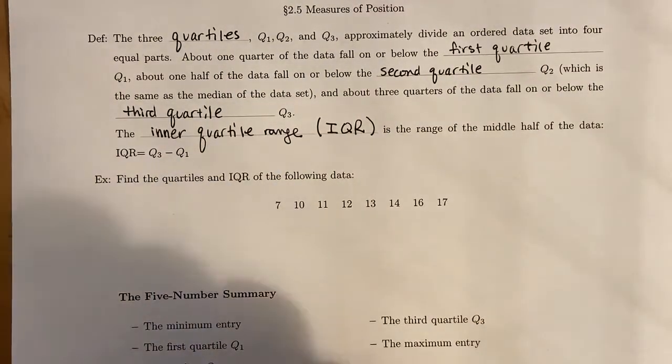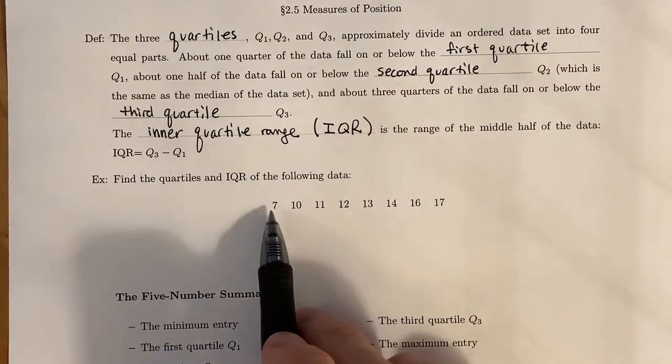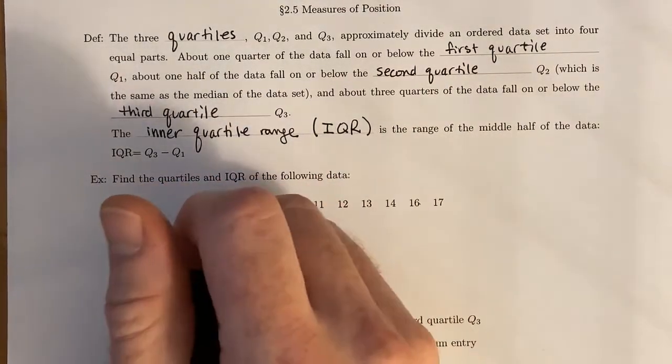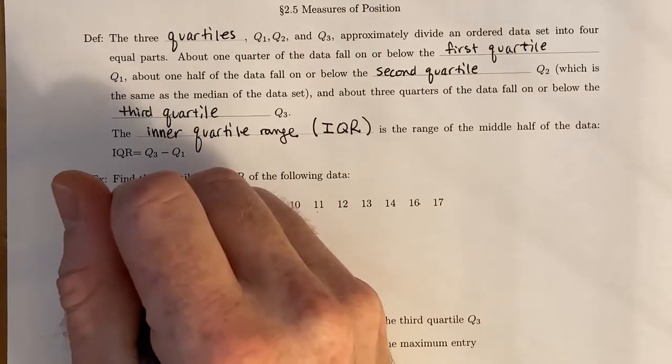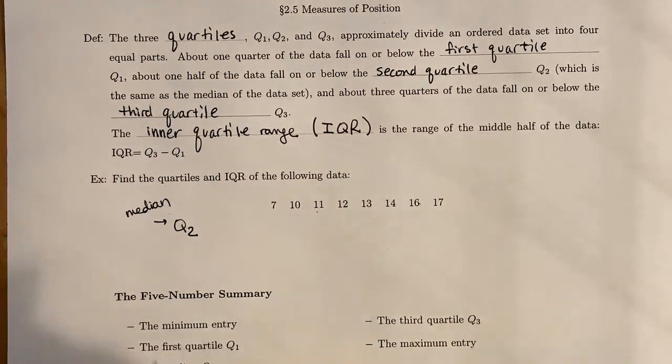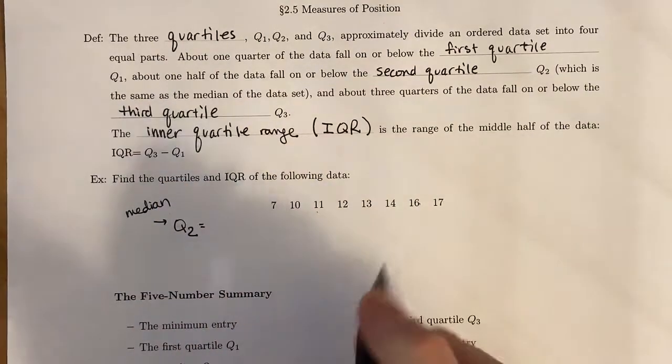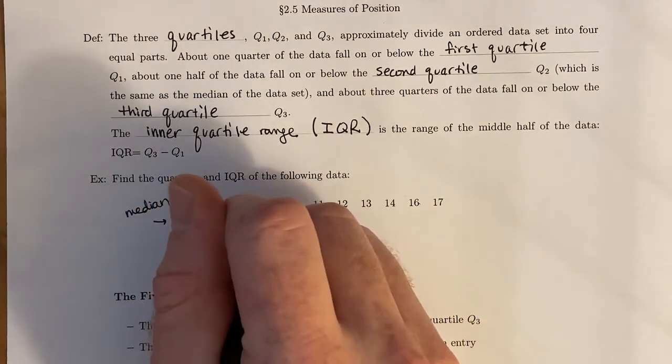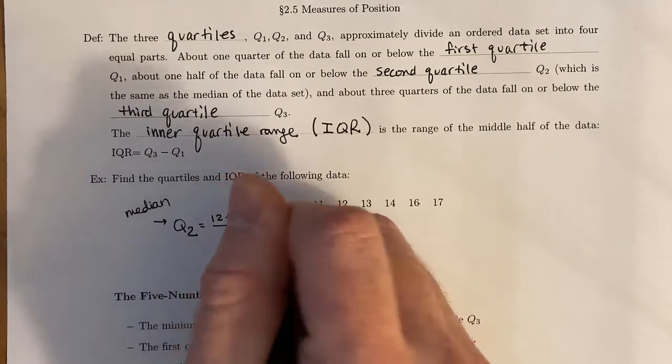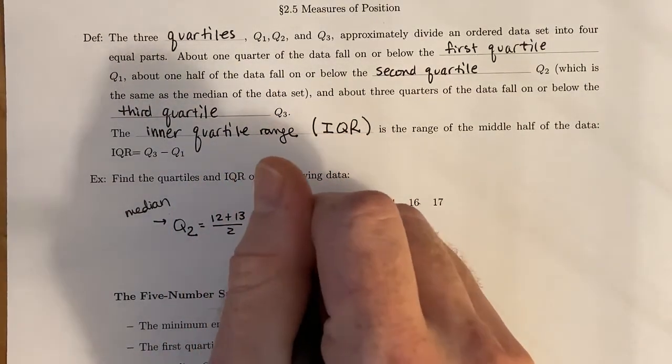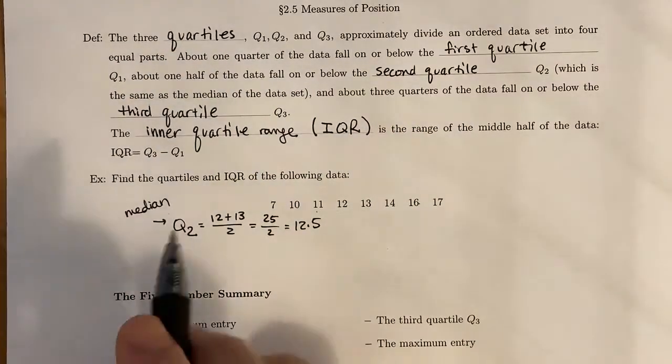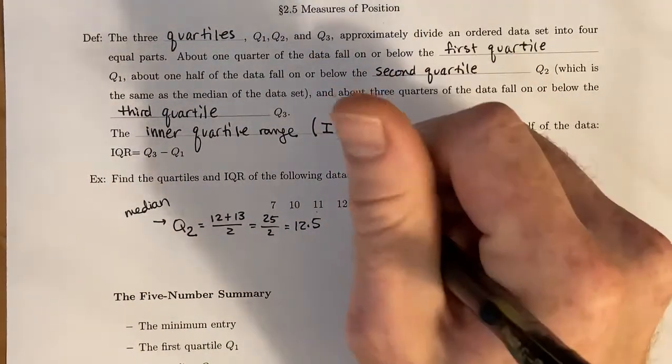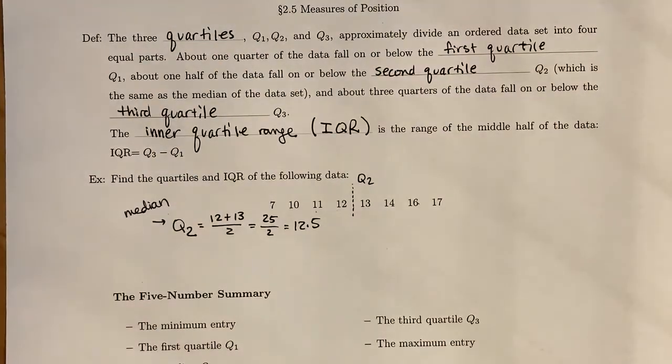Let's look at this example. We want to find each of the quartiles and then figure out the IQR for this data set. We have a total of eight data values, which means that when we find Q₂, which again is just the median, since we have an even number of data values, we have to come from either side and meet in the middle, which is both at 12 and 13, and we take the average of these two. So 12 plus 13 gives us 25, divide that by 2 gives us 12.5—that is Q₂, the median of this data set.